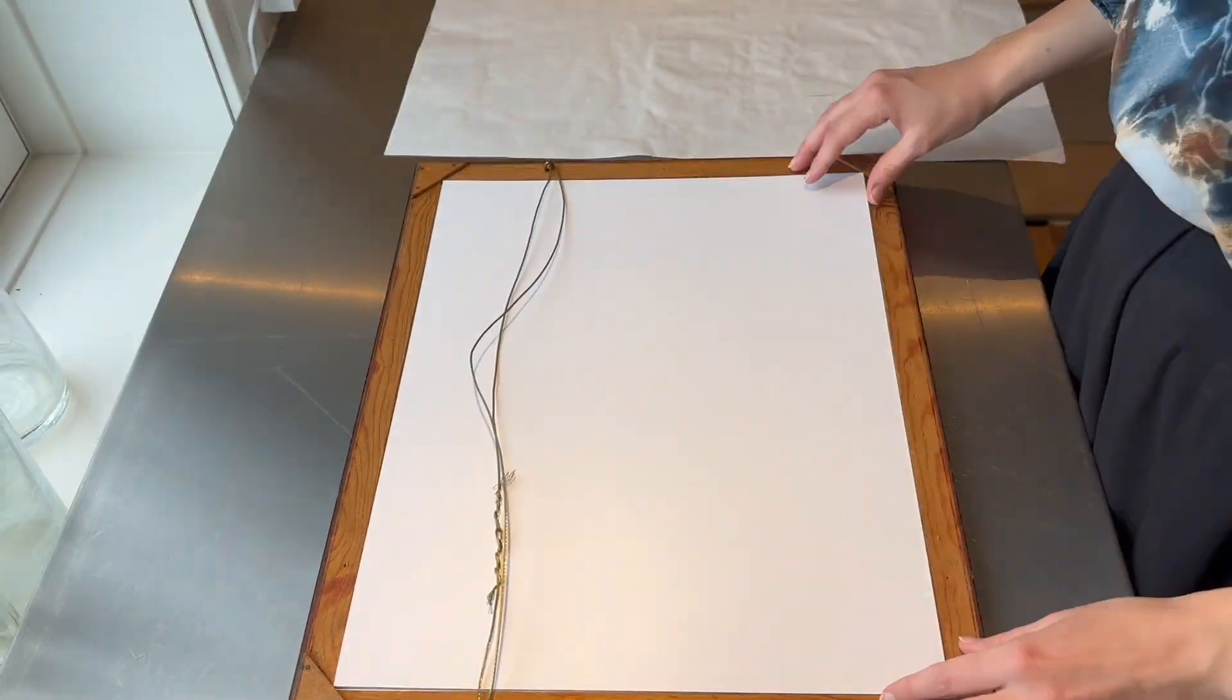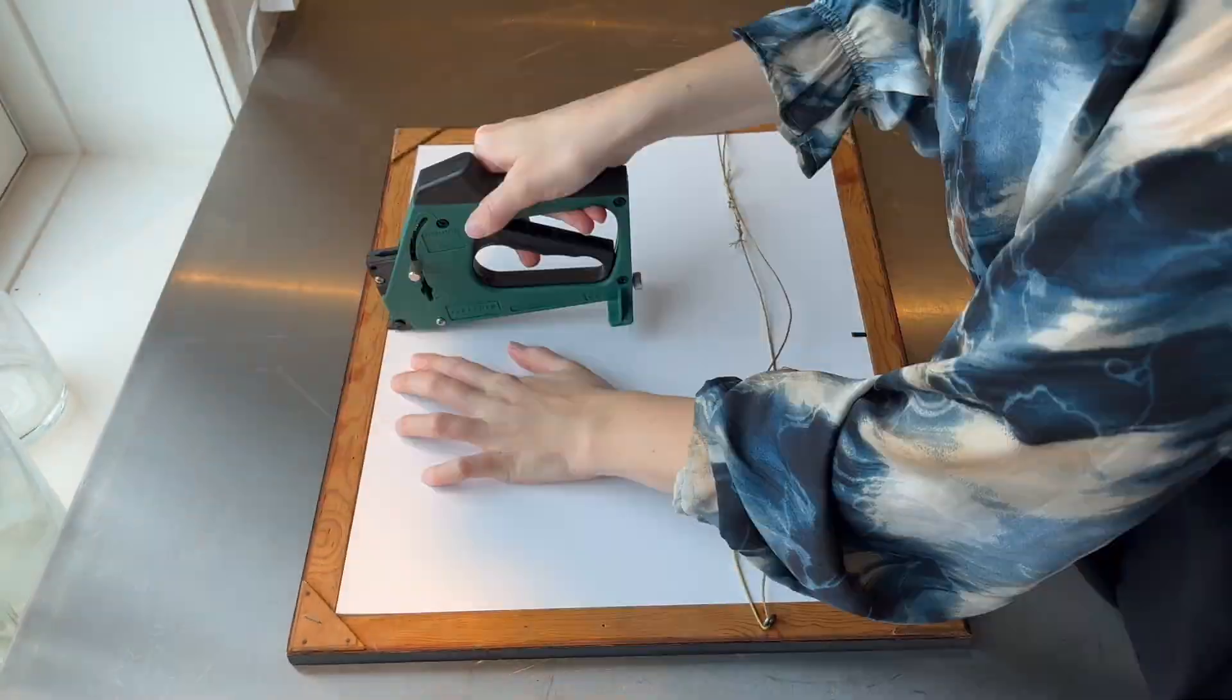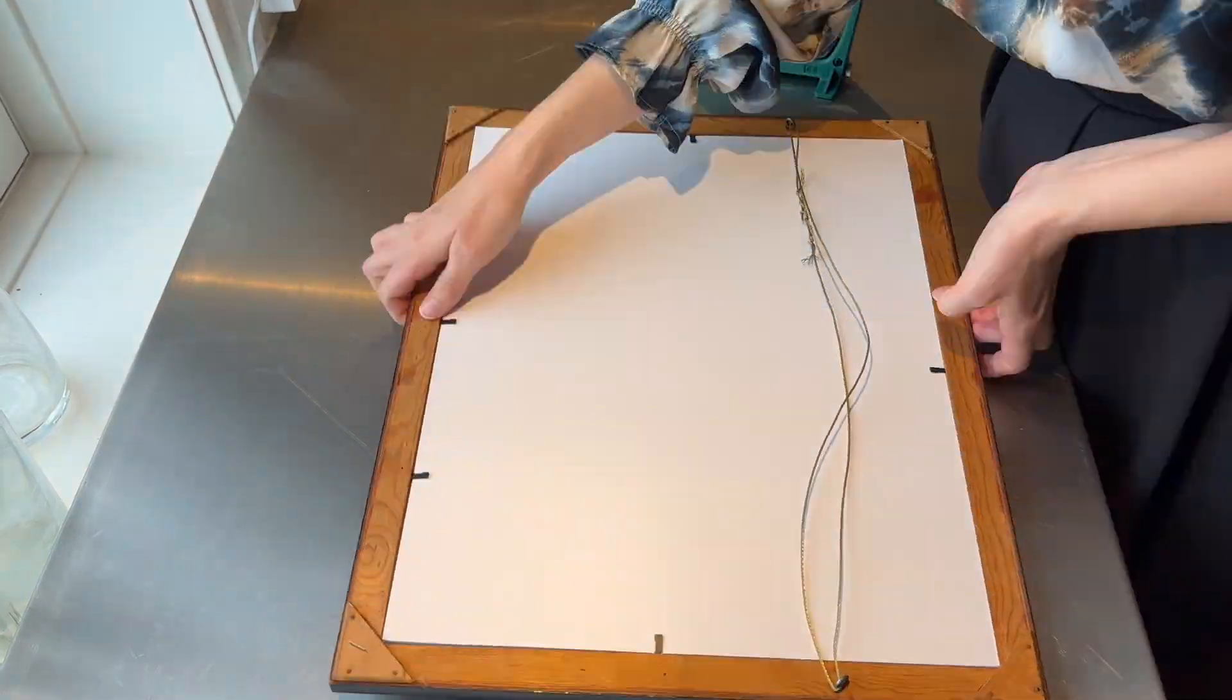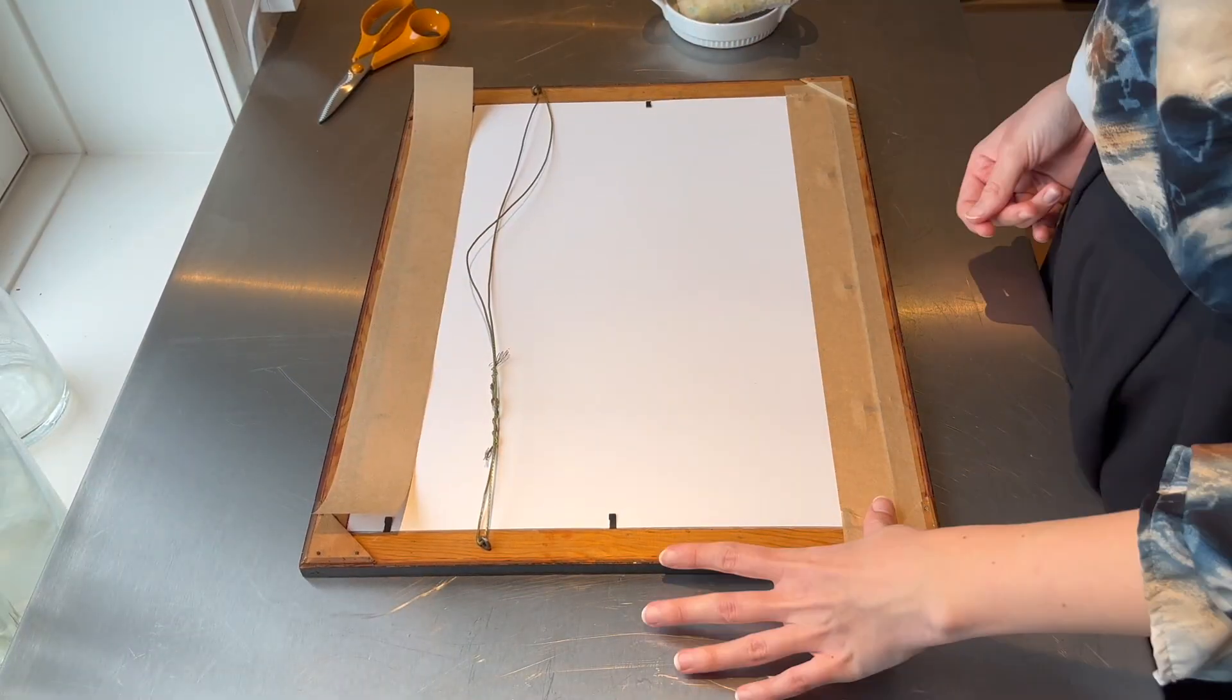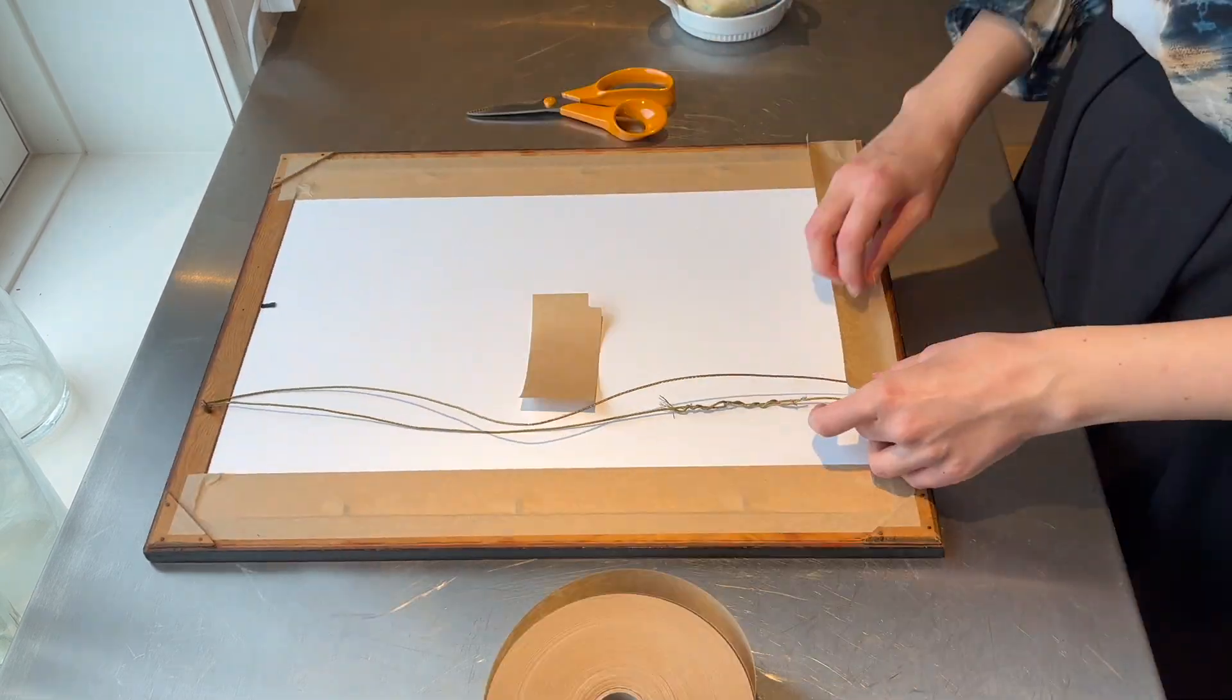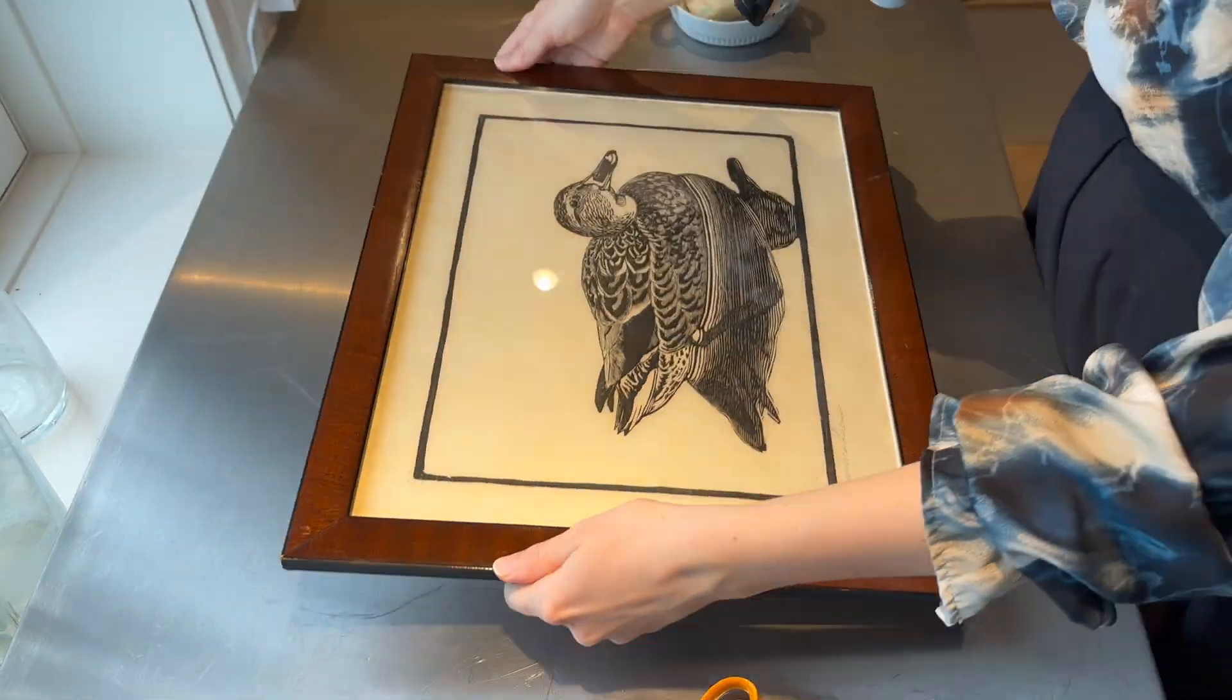I first place the spacer and then the object with the backing board into the frame. I check that I am satisfied with how it sits before securing it with tabs. Finally, using a starch-based tape activated with a damp sponge, I seal the frame to prevent dust and insects from getting inside over time.